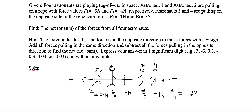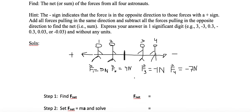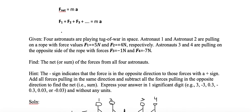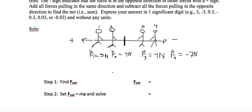Newton's Second Law basically has two steps. Step one is finding the net force: add up all the values F1 plus F2 plus F3 plus F4. We have 5 newtons going to the left, then add 4 newtons in that same direction — both are positive. Then we subtract the forces going in the opposite direction: subtract 1 newton and subtract 7 newtons, since the negative sign means they're in the opposite direction.